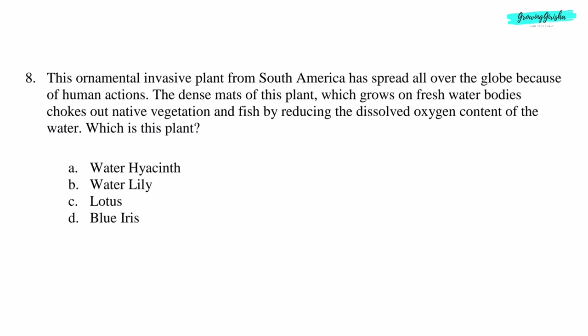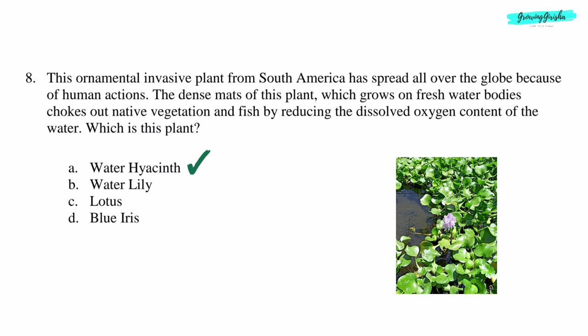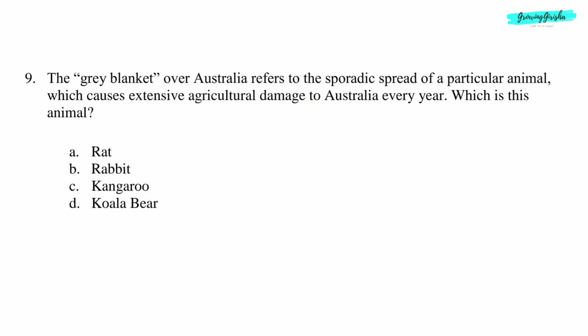Question 8: This ornamental invasive plant from South America has spread all over the globe because of human actions. The dense mats of this plant, which grows on freshwater bodies, chokes out native vegetation and fish by reducing the dissolved oxygen content of the water. Which is this plant? Option A: Water Hyacinth.